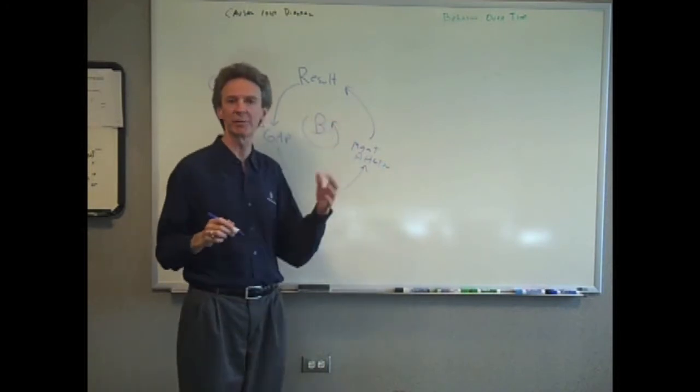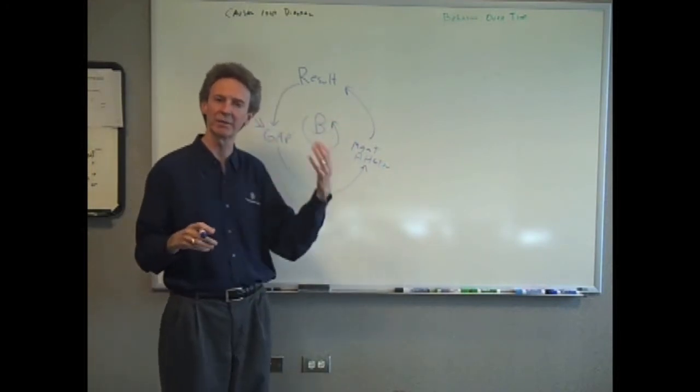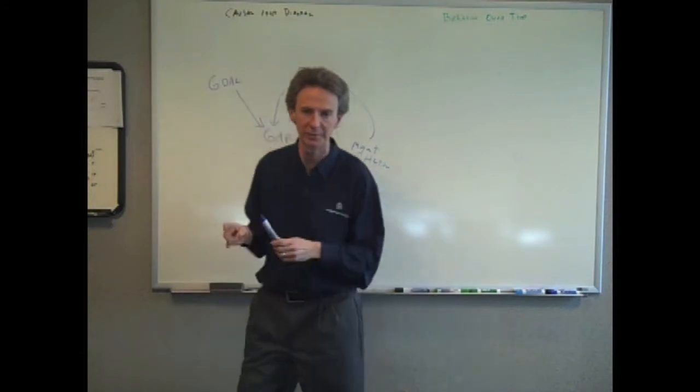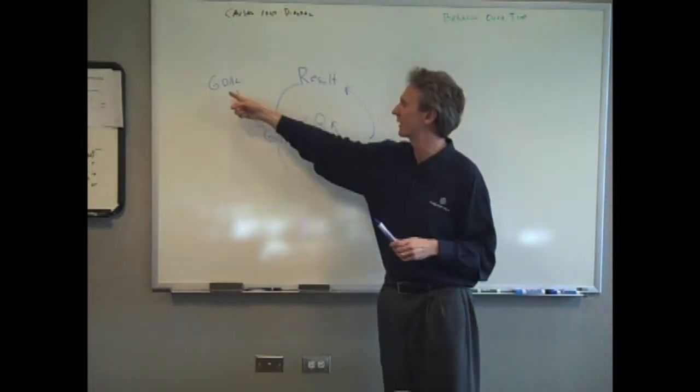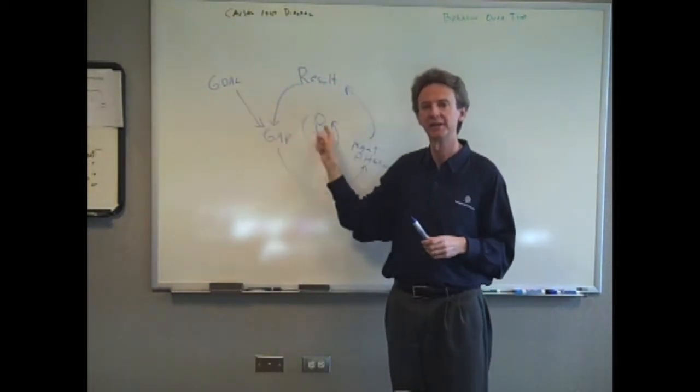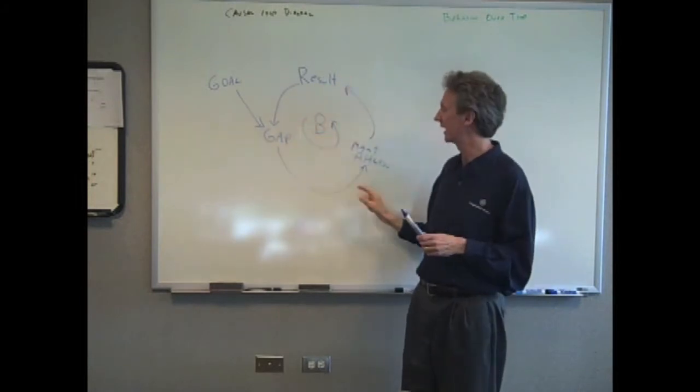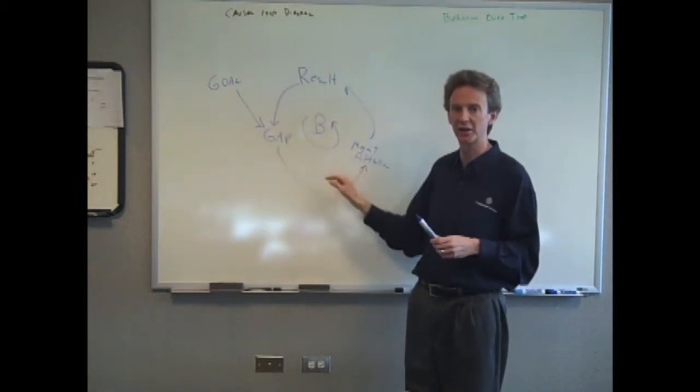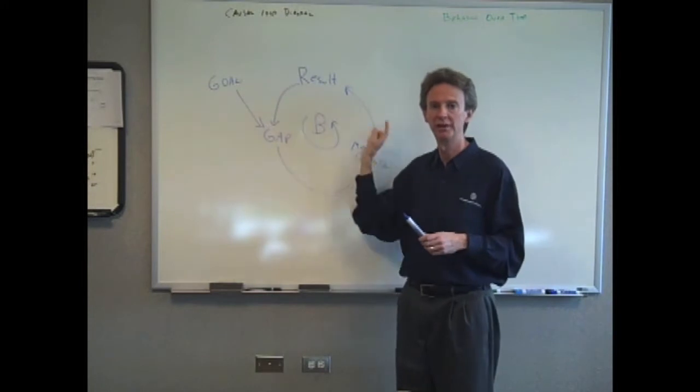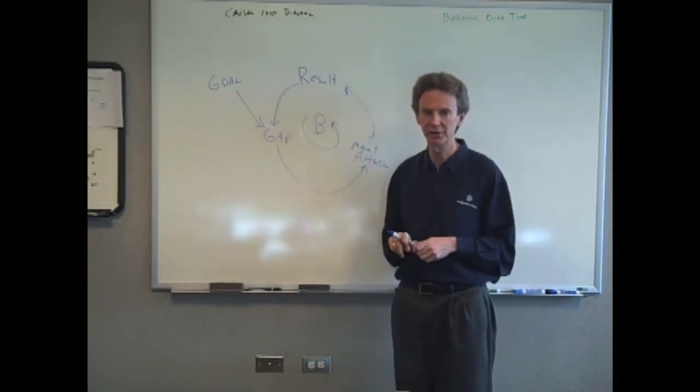So manager kind of swoops in and helps out and that improves the result. So this is a typical balancing loop. Sometimes balancing loops are called goal seeking loops because they always have a goal, implied or not. They always have a gap, potentially, and then it drives some action to get the result back to the goal.